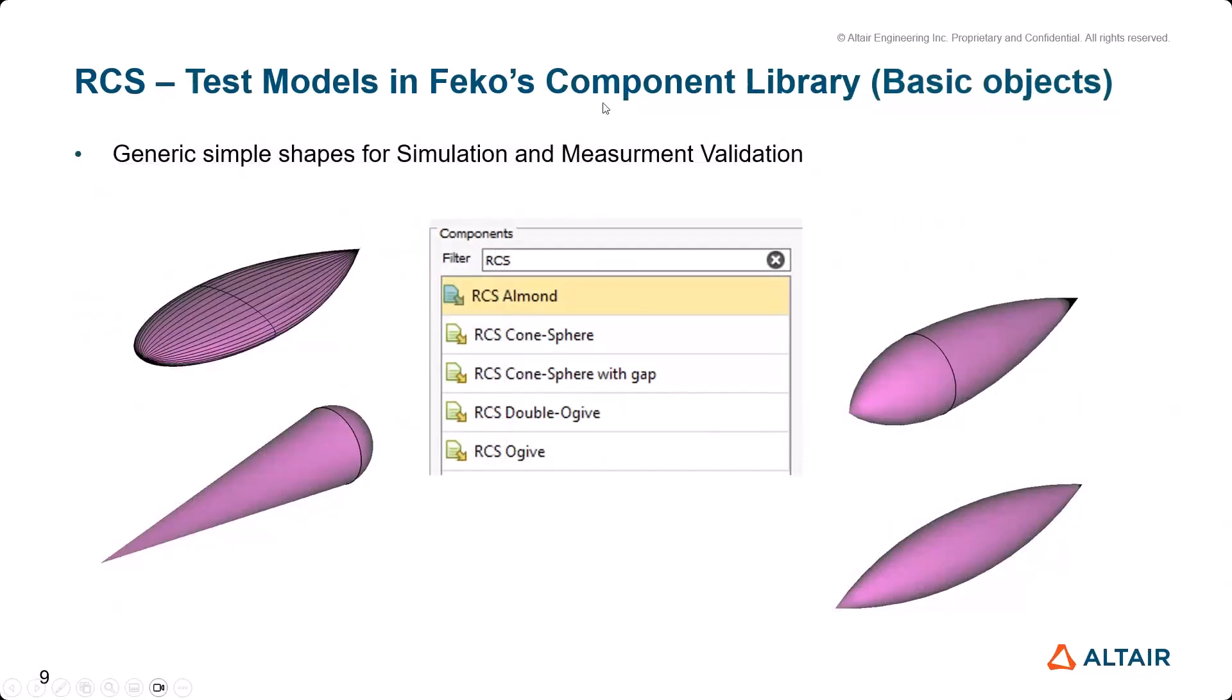Here are basic RCS objects with simple shapes for simulation and measurement validation: cone sphere, cone sphere with a cap, double ogive, and ogive. You can use these basic shapes for your validation study.